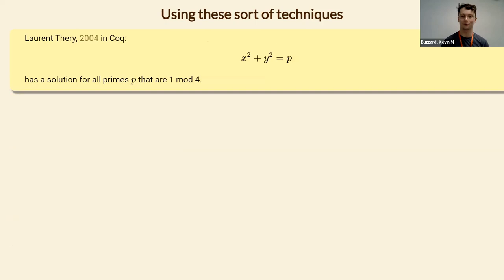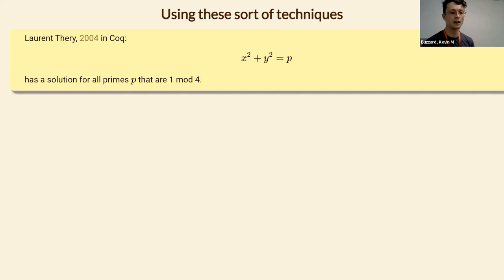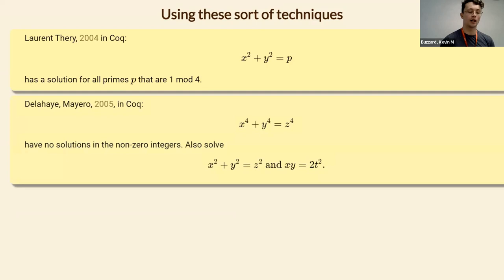People have used these techniques in formalization before. The first result sometimes known as Fermat's Christmas Theorem — because Fermat wrote it in a letter dated December 25th — says that x squared plus y squared equals p has a solution for all primes p that are one more than a multiple of four. This was formally proved almost 20 years ago in the proof system Coq.